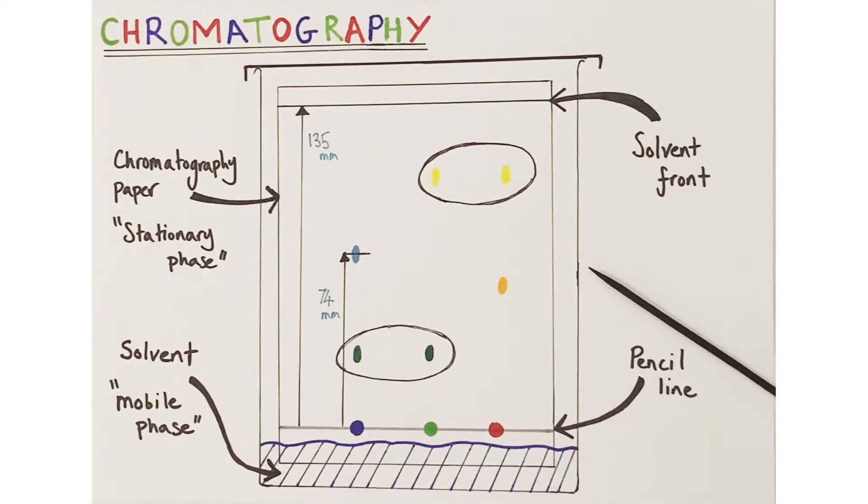This diagram represents a basic paper chromatography experiment and it's reasonably simple to understand. Firstly, we have the chromatography paper itself, which is known as the stationary phase. It's designed to absorb and soak up the solvent itself and allow that solvent to travel upwards over time.